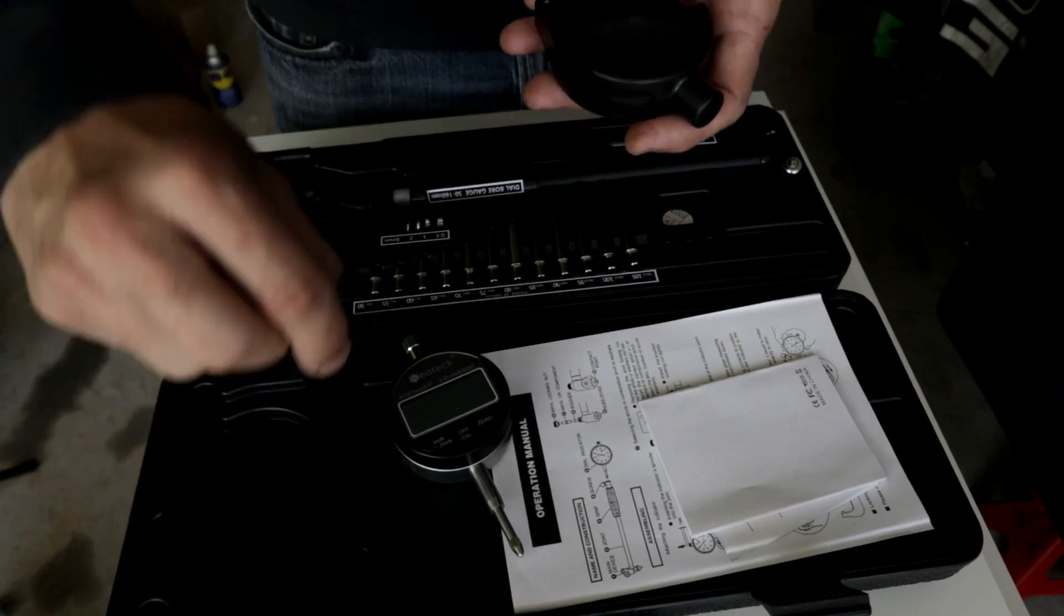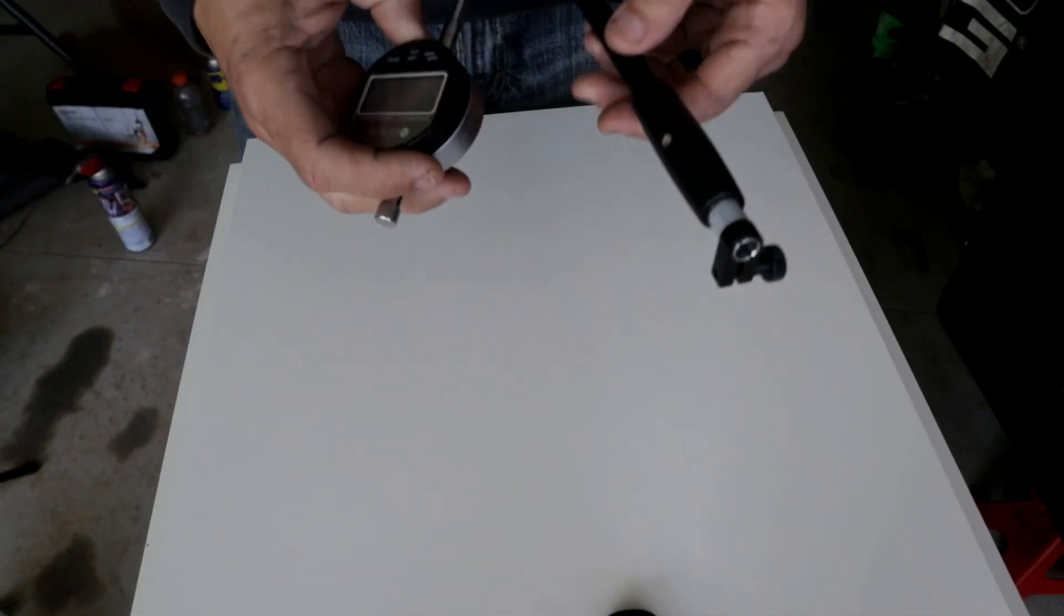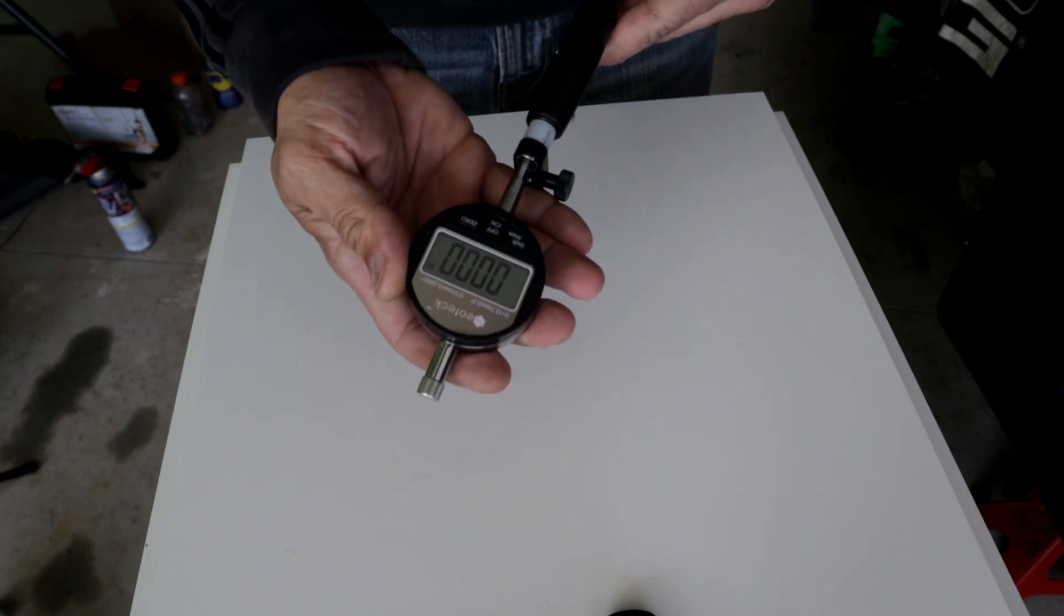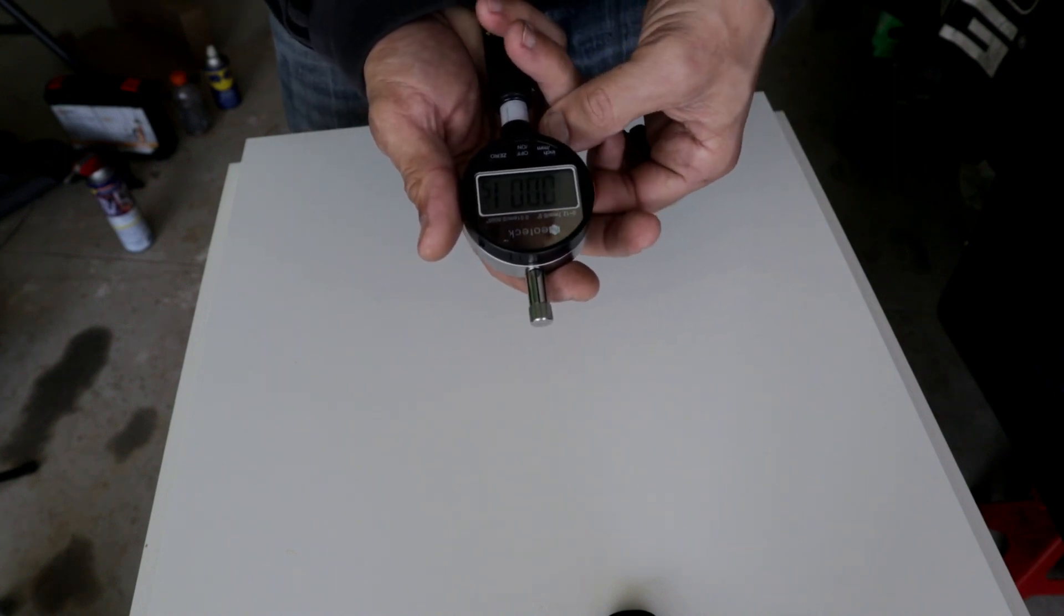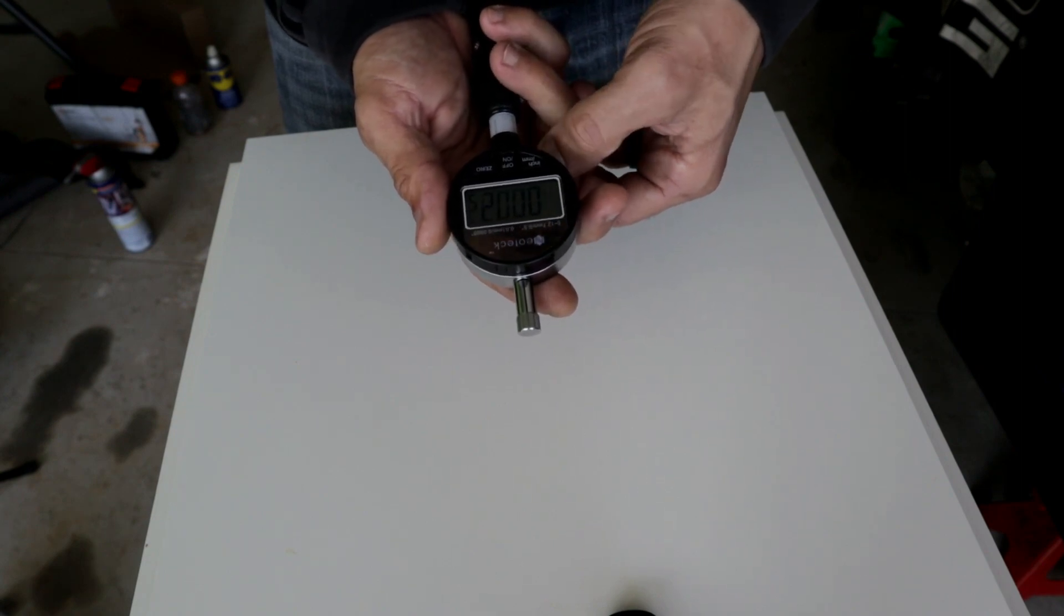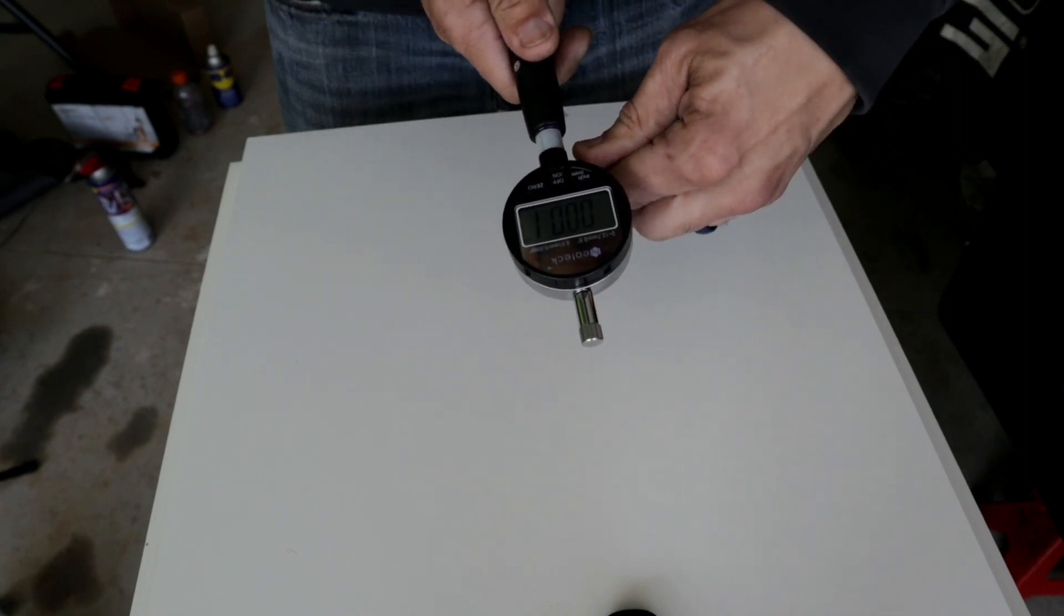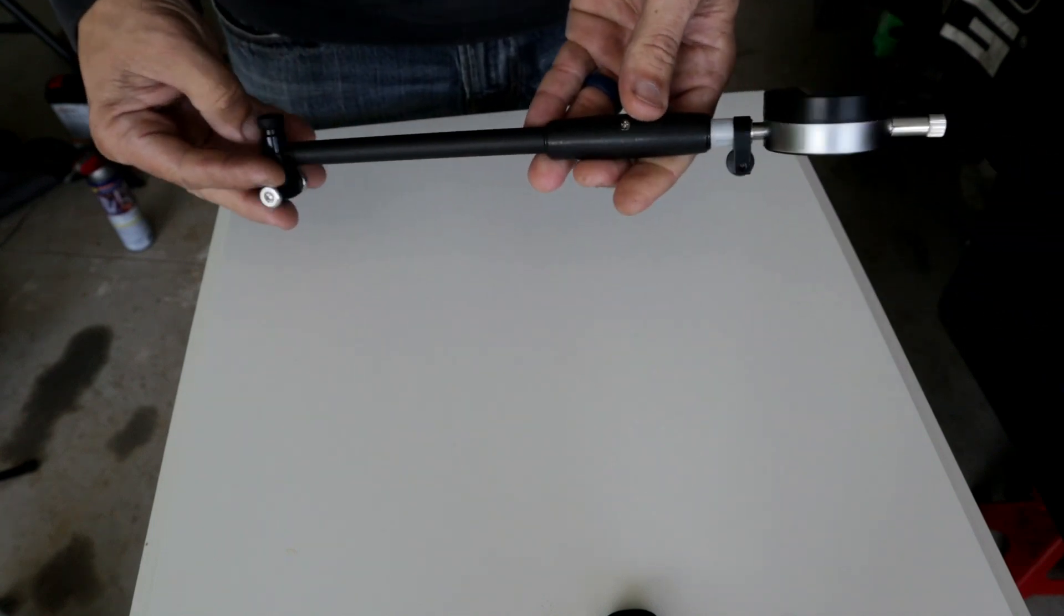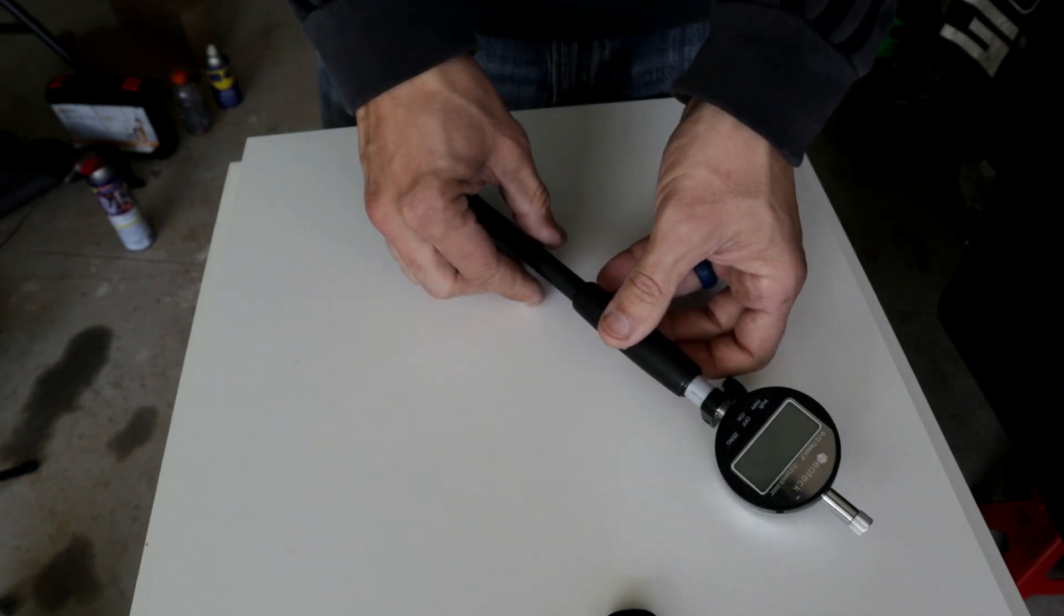The first thing we're going to do is install the indicator to the measuring arm. You've got to make sure that it's in contact so you can start your indicator and turn it on. Normally what I like to do is push it until you can see one thousandth of an inch, and then you can tie it to the measuring arm. Once you do that, then you can zero your indicator.